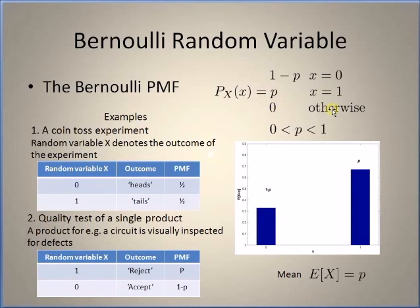The mass function is always 0 for x not equal to 0 or 1. Here, the value p is the probability that the random value equals 1. Let us look at some examples.